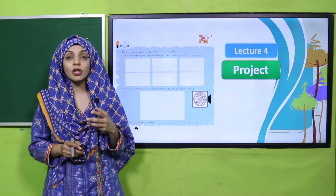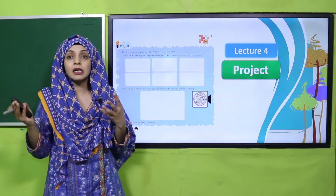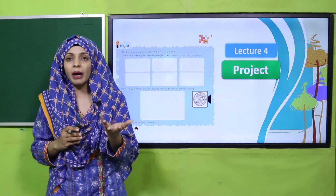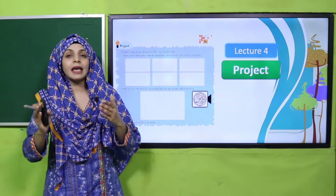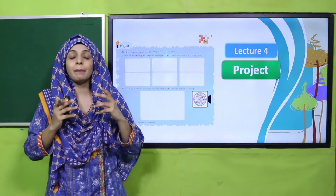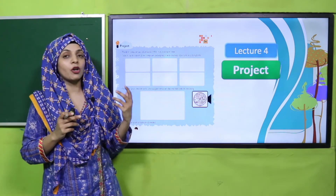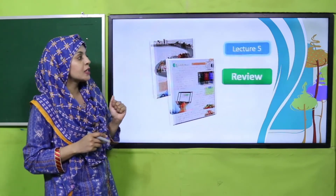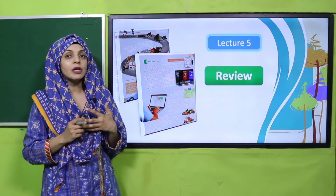Then we move to Lecture Number Four, which will be a project — how the computer developed. Early computers were very large, and today you have a computer in the palm of your hand: your Android mobile phone. That is a form of a small computer. We will create a pictorial project showing the chronological development of computers. This will be very interesting.